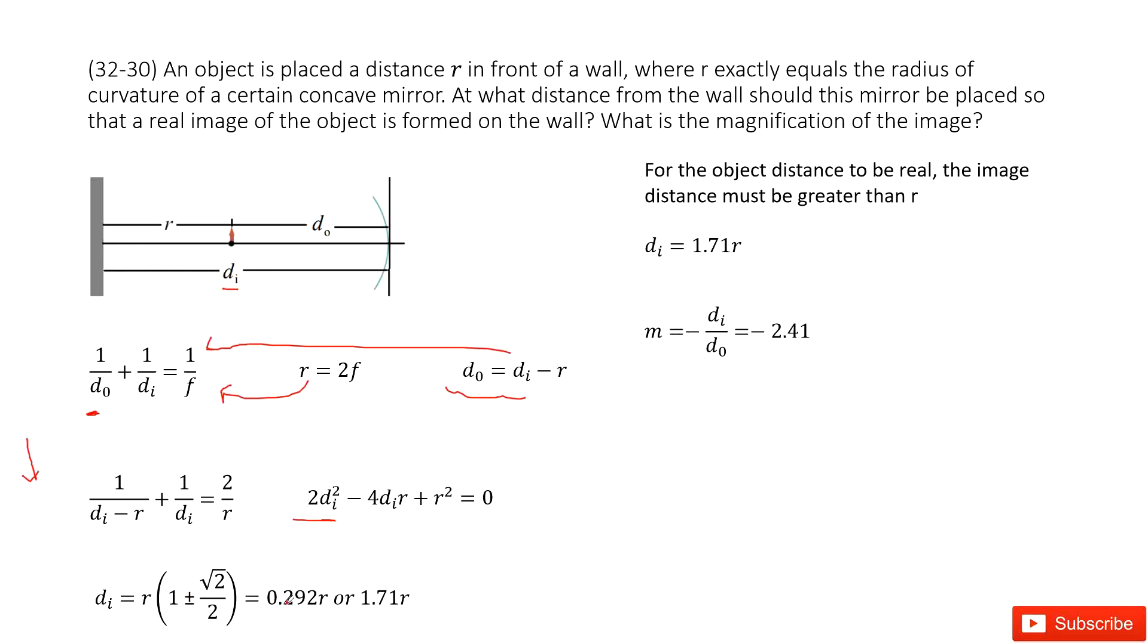One is 0.29r, another one is 1.71r. But it tells you this is a real image that is formed on the wall.